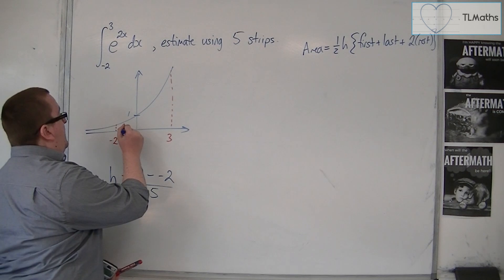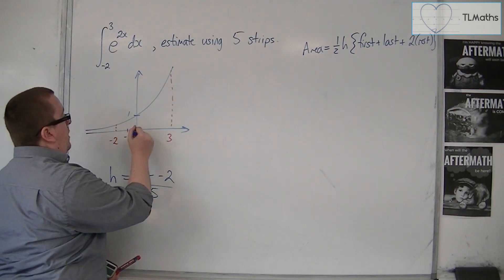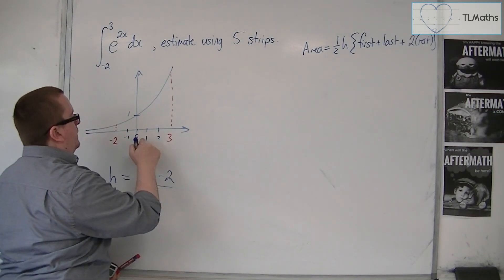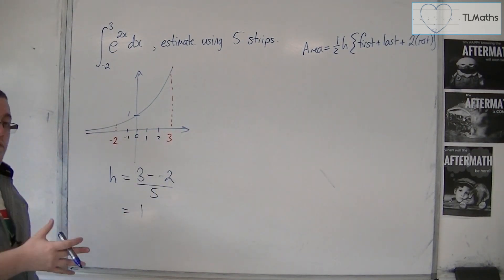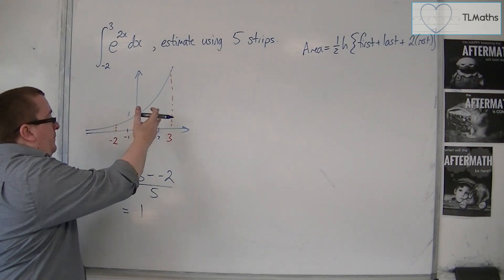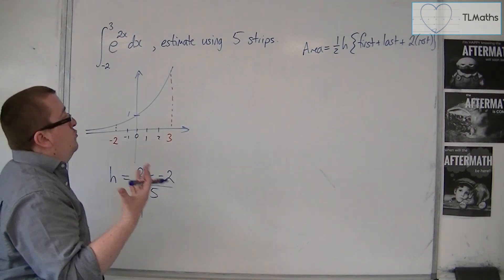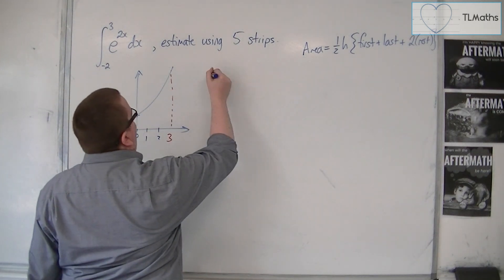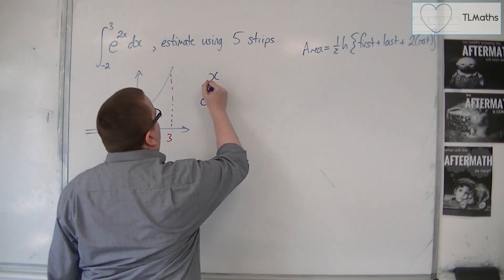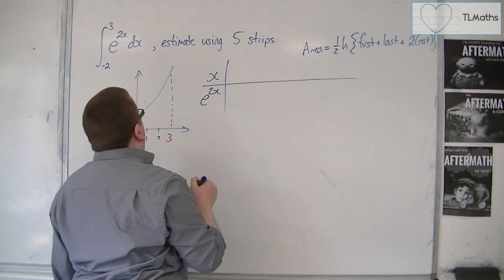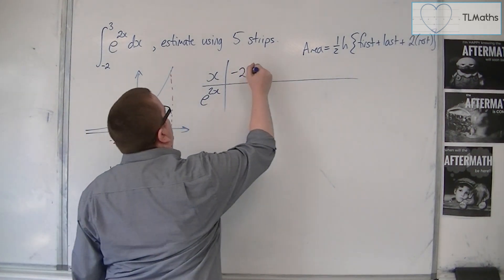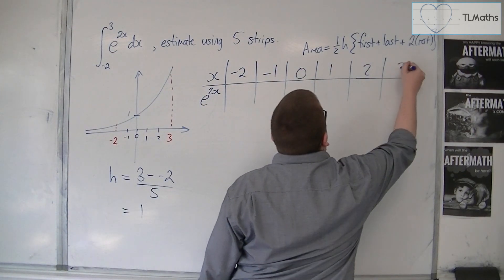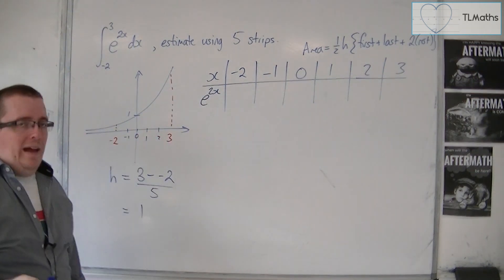So that means we're actually splitting it up into minus 2, minus 1, 0, 1, 2 and 3. Those are the ordinates, x ordinates. Now it would be useful to draw yourself a little table. We've got the x values and the e to the 2x values. So we're starting at minus 2, we've got minus 1, 0, 1, 2 and finally 3. So they're your x ordinates.